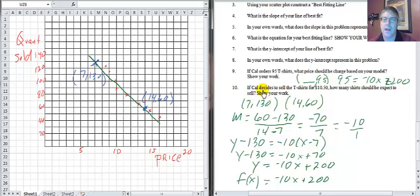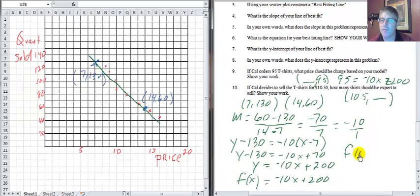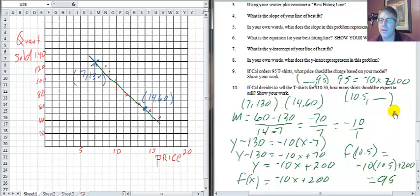If Cal decides to sell t-shirts for 10.50, how much should he expect to sell? That's the ordered pair 10.5 comma y. In that situation, we will put 10.5 in for x. F of 10.5 equals negative 10 times 10.5 plus 200. And interestingly enough, we get 95. So apparently, we have to charge 10.50 if we want to sell 95. Interestingly enough, we got the same answer. We're working with the same ordered pair there.